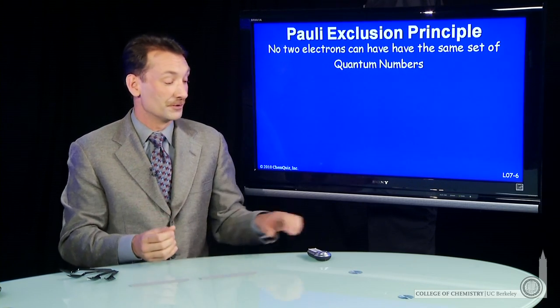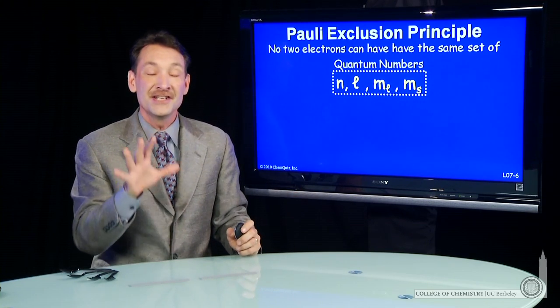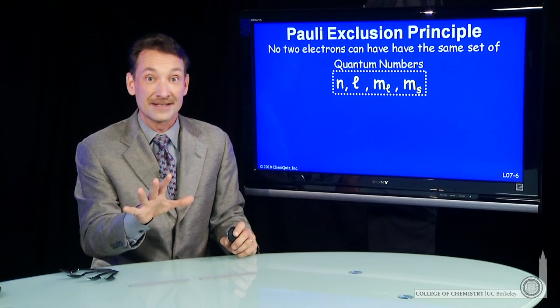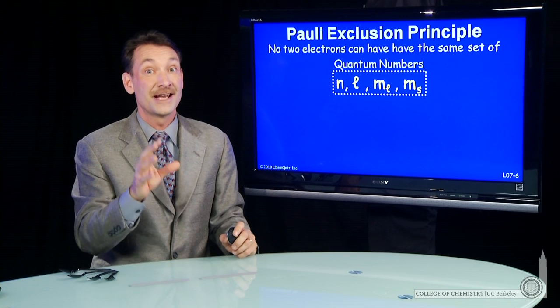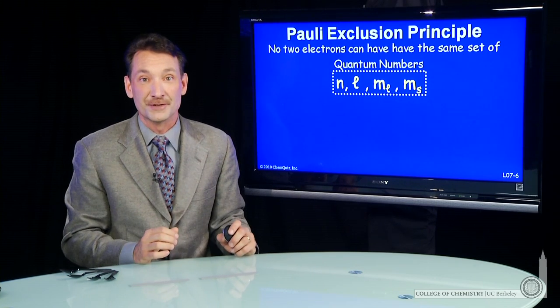One of those rules is of the four quantum numbers n, l, m sub l, and m sub s, each electron must have a unique set. No two electrons can have exactly the same quantum numbers. That's called the Pauli exclusion principle.